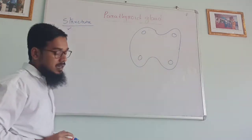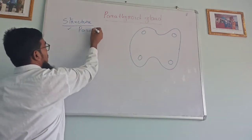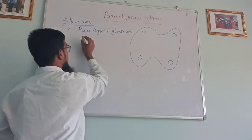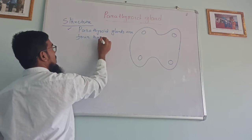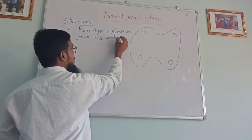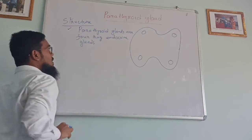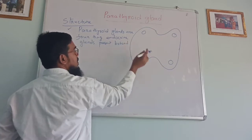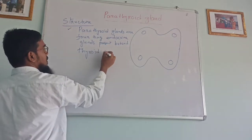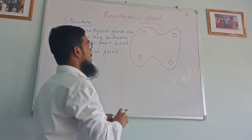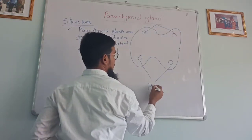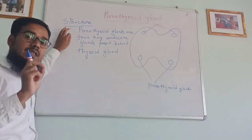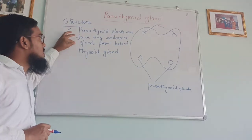So if we study the definition of parathyroid gland: parathyroid glands are four teeny, means small, endocrine glands present behind the thyroid gland.